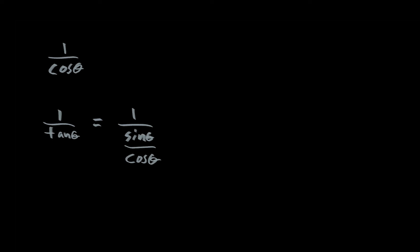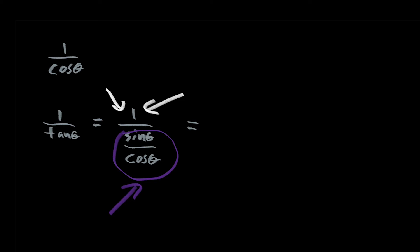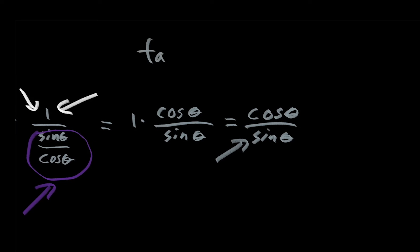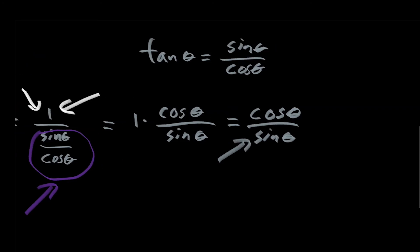Division by a fraction is the same as multiplication by the reciprocal. So dividing 1 by the fraction sine of theta over cosine of theta is the same as taking the reciprocal of that fraction and multiplying — so 1 times cosine of theta over sine of theta, which equals cosine of theta over sine of theta. So 1 over tan equals cosine over sine. Since tan is sine of theta over cosine of theta, we would expect the reciprocal to be cosine of theta over sine of theta.